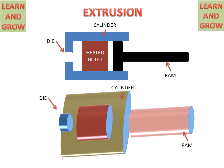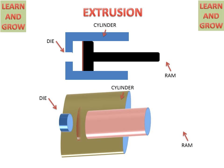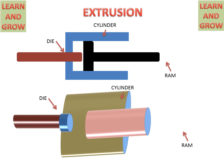Now we see the working of the extrusion process. When the RAM moves in the forward direction, it will press the heated billet through the die opening, and then this heated billet will convert into the desired shape of the die opening. This will be the final product of the extrusion process. This is called direct extrusion or forward extrusion.